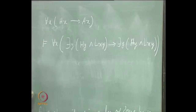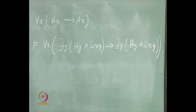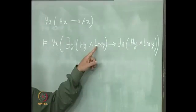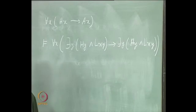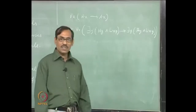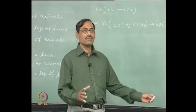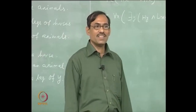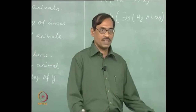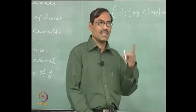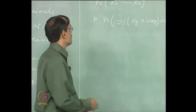The best method will be to proceed by reductio ad absurdum. You have all the information and your target is towards getting the bottom. That can be easy — this is a strategy which helps many times. Because you do not know where to introduce it, you know only what to introduce: L(x, y). So if I have all that information, probably they will cancel and give me bottom. Let us start with the reductio ad absurdum: for each x, H(x) implies A(x), and it is not the case that for each x, there is y — H(y) and L(x, y) — implies there is y — A(y) and L(x, y). So this entails bottom.